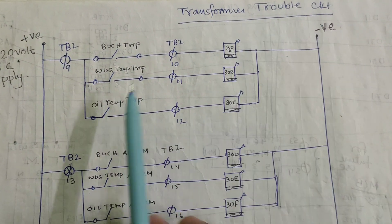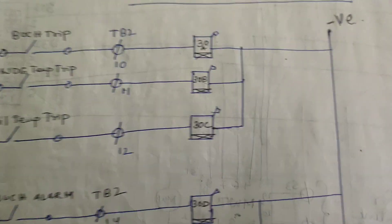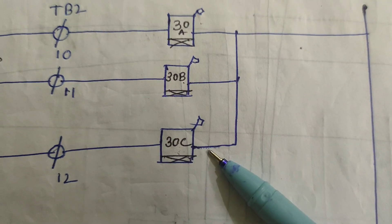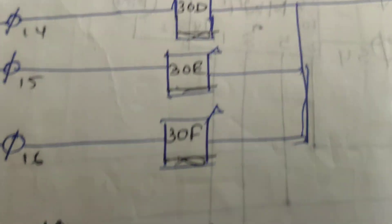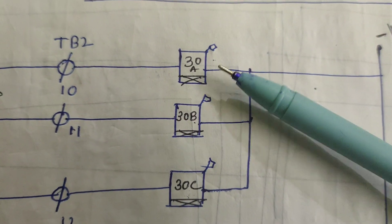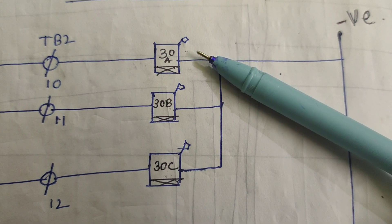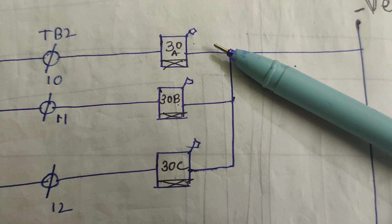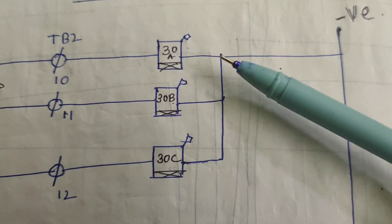Considering this importance, we always use different types of protection circuits. In the control room, different types of relays are present on the control and relay panel. You can see relays labeled 30A, 30B, 30C — all are flag relays — and also 30D, 30E, 30F, 30G, 30H, and 30J in any power plant or grid substation control room.